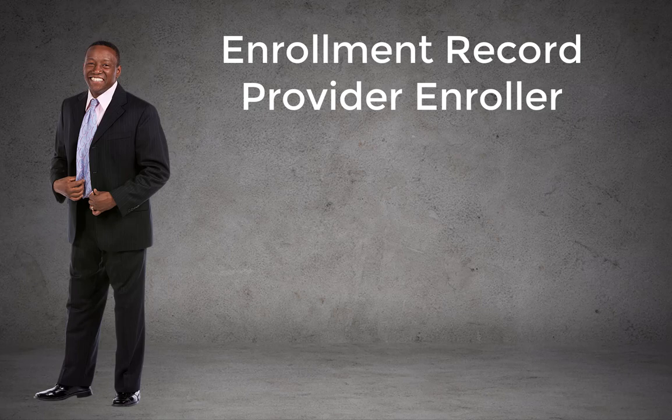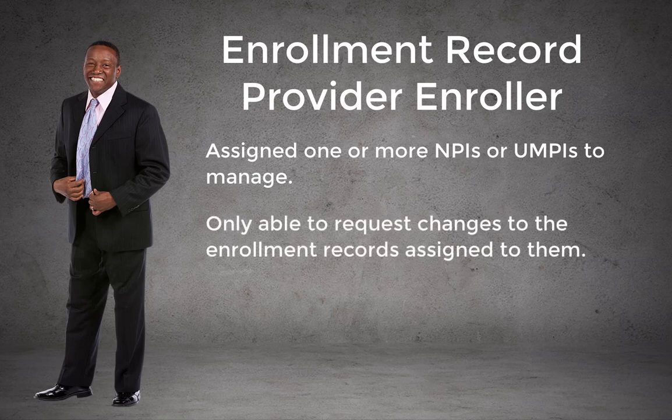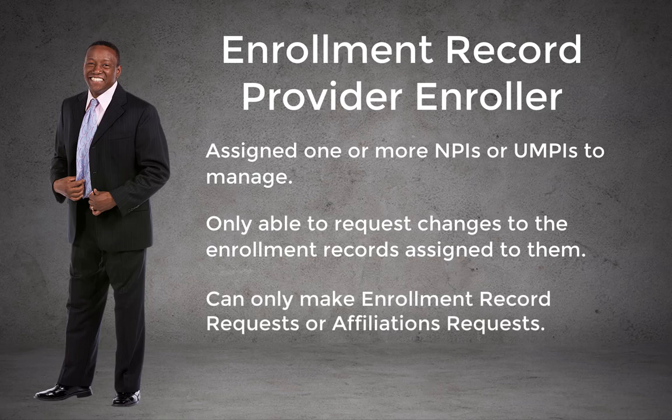This man is the Enrollment Record Provider Enroller for his organization. A person in this role has access to manage the information for a specific enrollment record within a portfolio. An Enrollment Record Provider Enroller is assigned one or more National Provider Identifiers, NPIs, or Unique Minnesota Provider Identifiers, referred to as UMPIs, to manage and only has the ability to request changes to the enrollment record. Enrollment Record Provider Enrollers can only make enrollment record requests or affiliation requests.